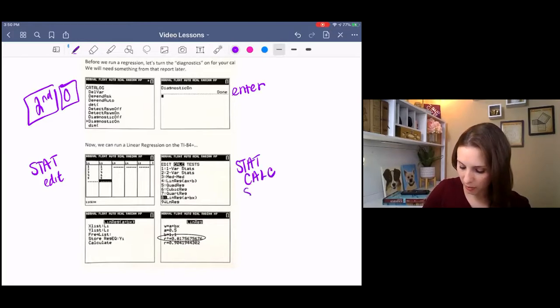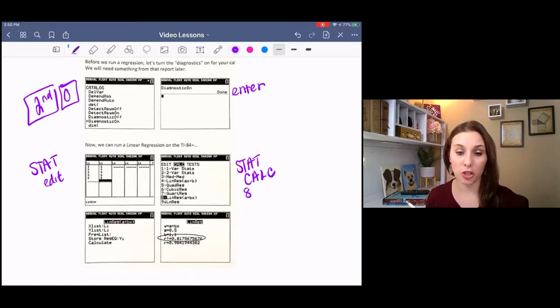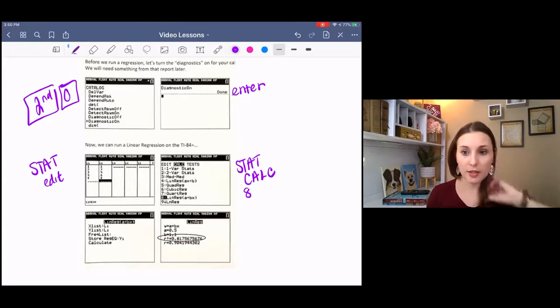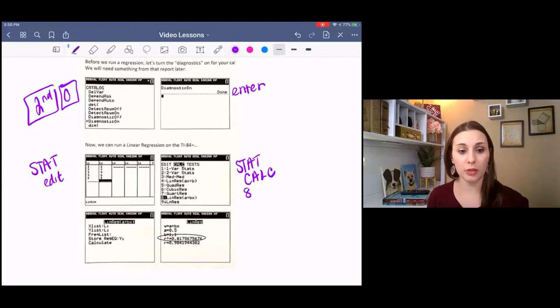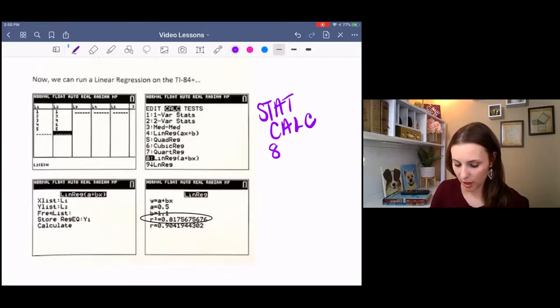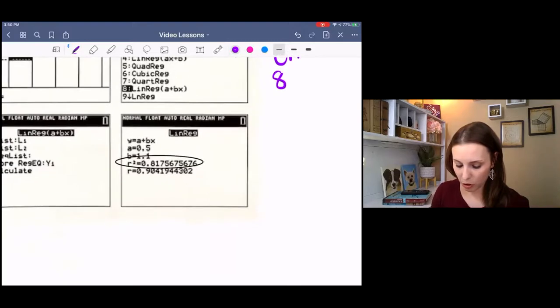Then go to stat calc, and you're going to go down to number eight, which is linear regression. Then you'll put in your correct list for which variable it is. So in this case, x was L1, y was L2. We hit calculate, and you can see that the top part is your linear regression equation. And then the middle here is the coefficient of determination.